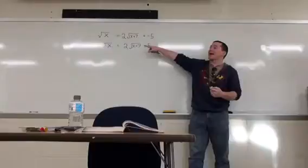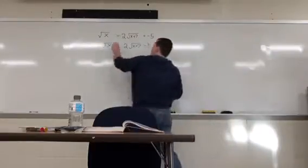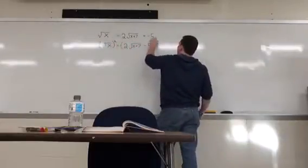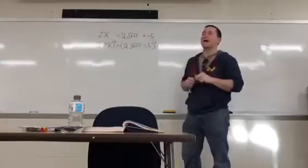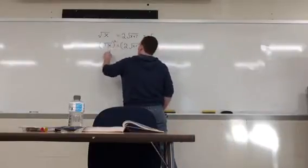Now, I have the radical isolated. So, what do I do? Square it. Square both sides. Again, that means the entire right gets squared. It has to be foiled. On the left, square root of x squared is x. On the right, foil that out.